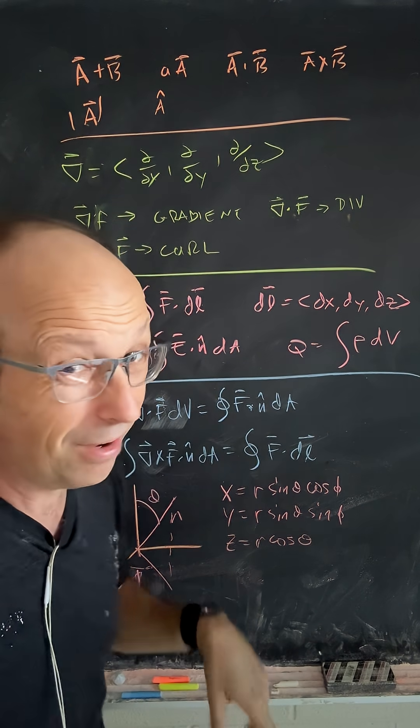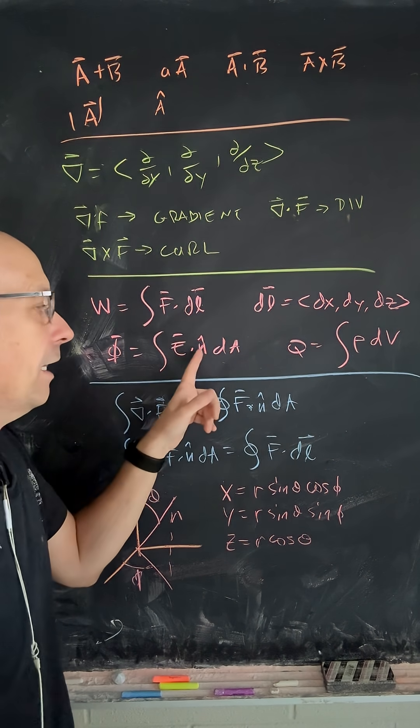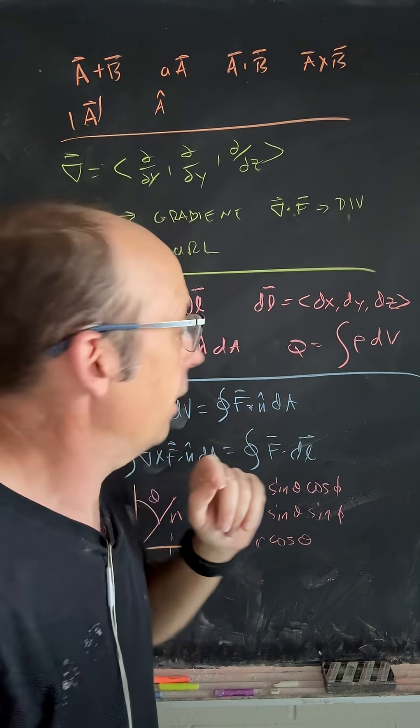Now, the book uses d tau. Don't like that. And it uses e dot the vector dA. I like to associate n hat with a surface, not dA element.